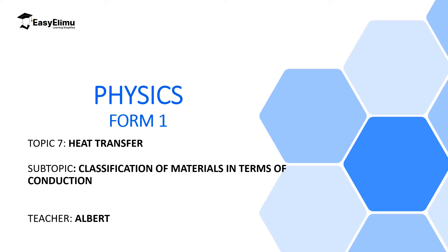Welcome to ECE LIMU Learning Simplified. In the previous lesson we discussed heat transfer and the three modes of heat transfer: conduction, convection, and radiation. We then narrowed down to conduction, where we have two mechanisms — vibration of atoms and movement of free electrons — which are used to classify materials as good conductors and poor conductors. In this lesson we are going to talk about classification of materials in terms of conduction. My name is Albert and I hope you enjoy the lesson.